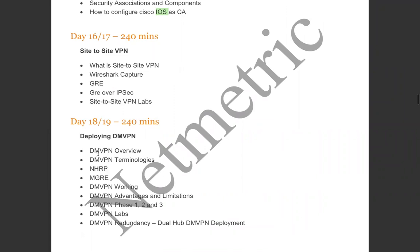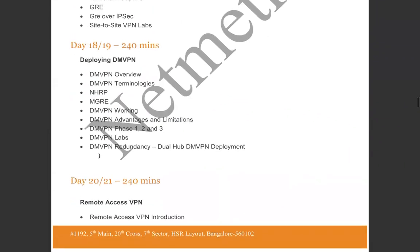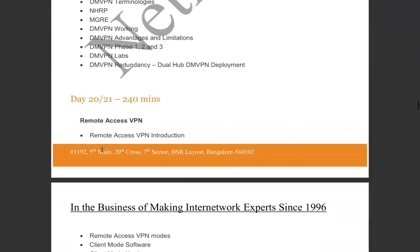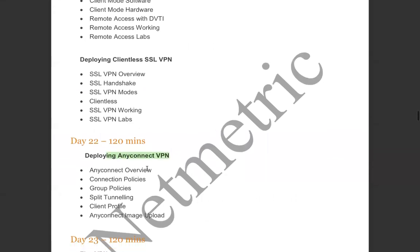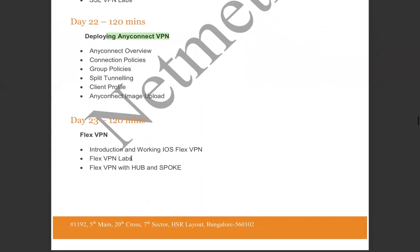In the IPsec world, we'll cover ESP modes, IKE phases and messages, NAT traversal, how to configure on IOS, and certificate authority setup on routers — not on Windows 2012 or 2016, since Cisco won't test Windows-based CA. We'll cover site-to-site VPNs with Wireshark captures, GRE, GRE over IPsec, SVTI, DMVPN with different phases, dual-hub VPNs, and remote access VPNs.